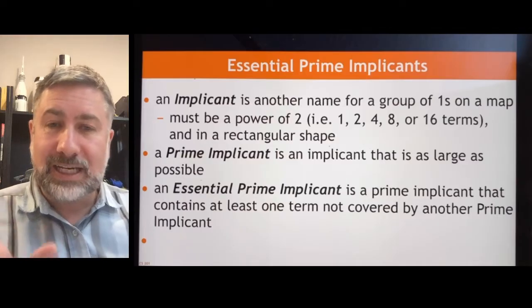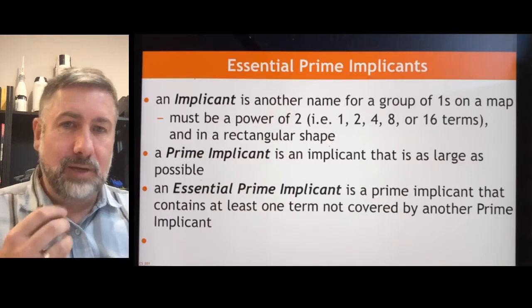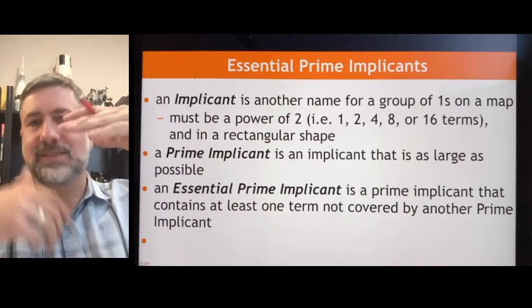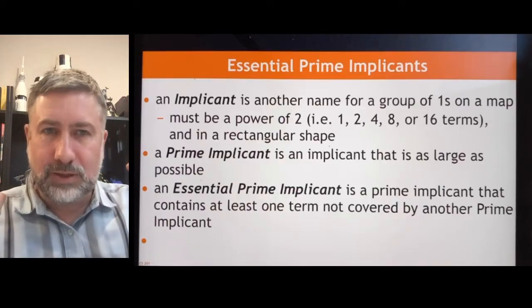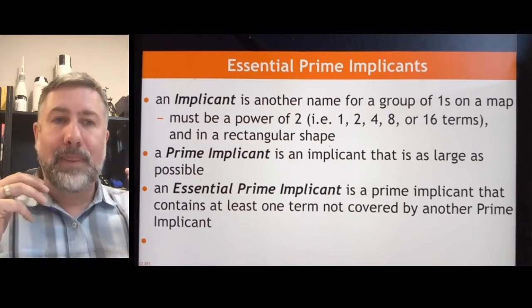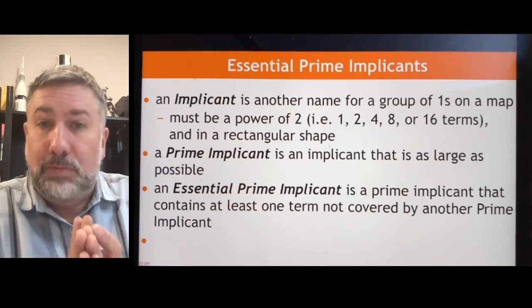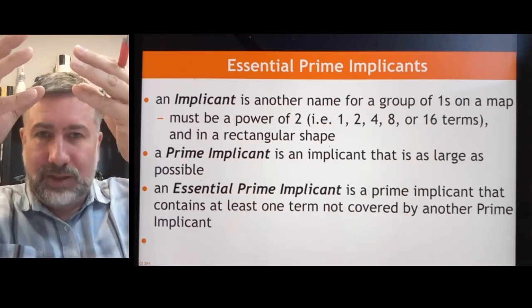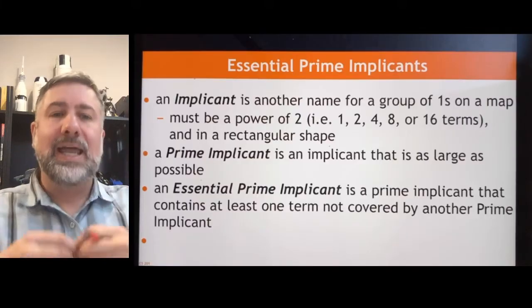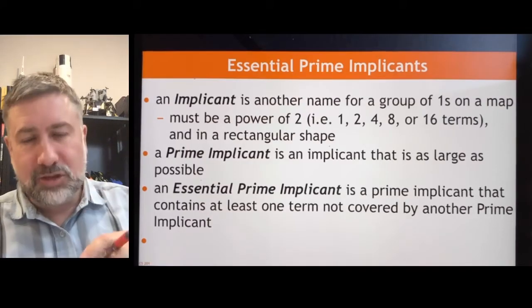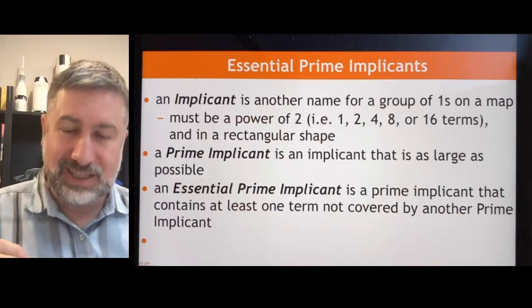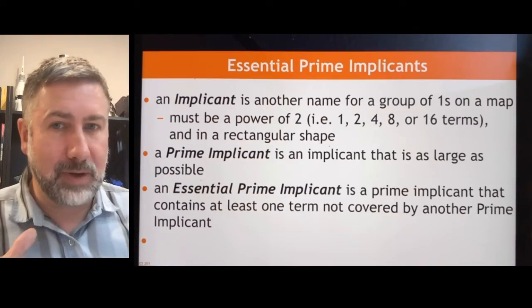Remember, we can overlap terms — that's our idempotent rule that allows us to take a minterm and duplicate it, because x OR x equals x. So we can do all sorts of overlapping, which means there's potential for being wasteful if we overlap too much. An implicant is any group of ones. A prime implicant is the biggest group of ones. And an essential prime implicant is the biggest group of ones that has to be in your solution.